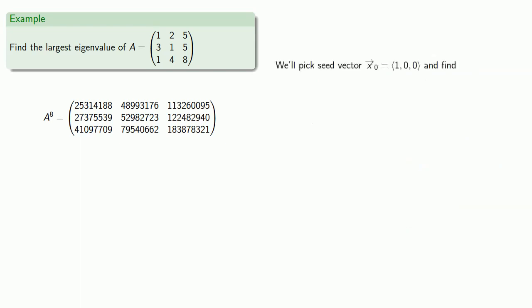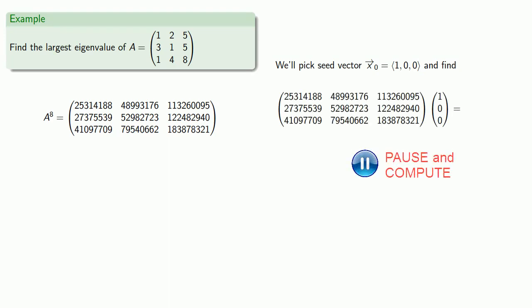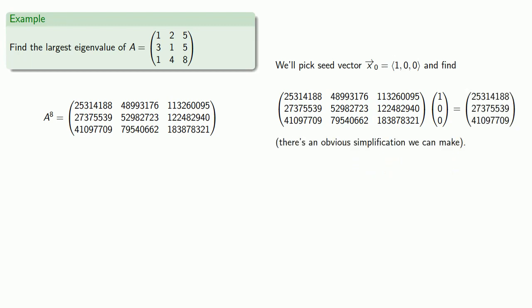So we'll pick a seed vector: 1, 0, 0. And we'll apply A to the 8th to this vector. This is our y to the 8th. There's an obvious simplification we can make here, and then we can normalize this vector.